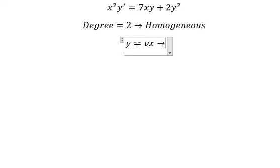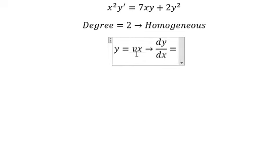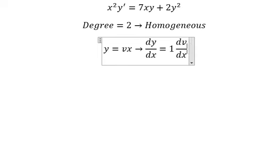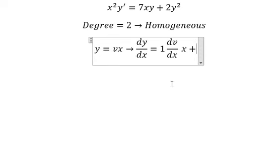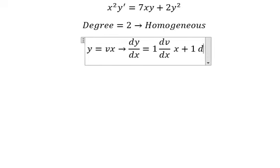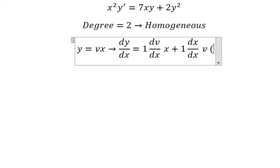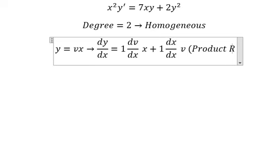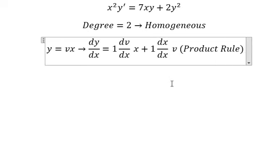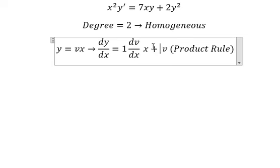Now we need to differentiate both sides. We have dy/dx = dv/dx times x plus v, and that is the product rule for the derivative. So if we simplify, we have like this.